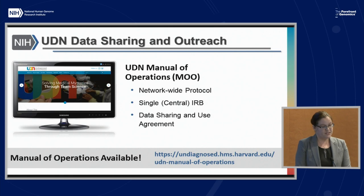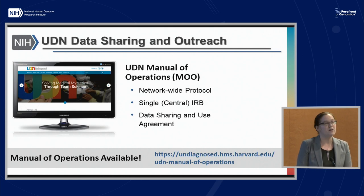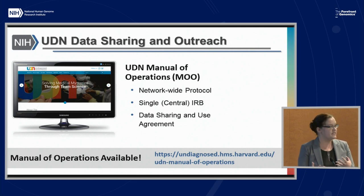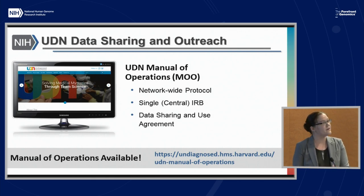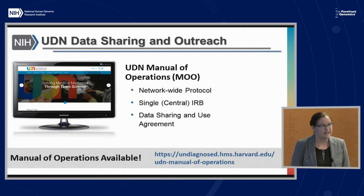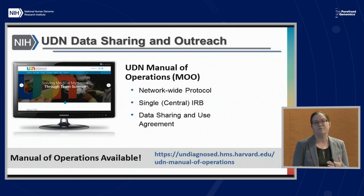This structure allows us, through our data sharing and use agreement, to share identifiable information within the UDN between investigators on a need-to-know basis based on individual roles. So the person doing model organism work following up on a variant can actually learn more about the clinical phenotype seen in a participant. A lot of important work happens in those interactions to bring together the different communities as part of the UDN.